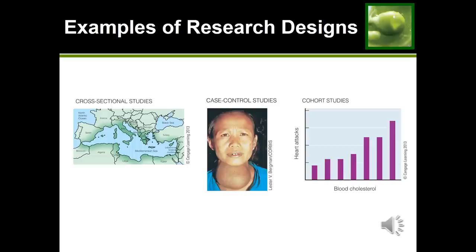The last type of observational study is the cohort study, where you track one individual factor to see if it has any association with something that might develop later on. For example, researchers gathered data on individuals, tracked their cholesterol levels, and followed them over time to see who developed heart disease. By doing this, they were able to correlate high cholesterol levels with a greater likelihood of developing heart disease later in life — all through observation, without any experiment.